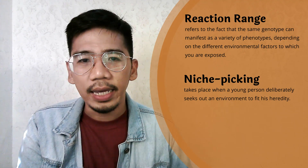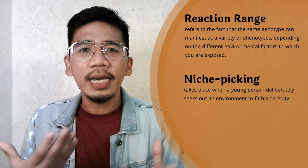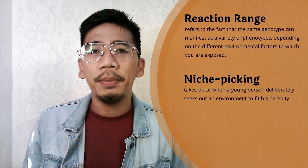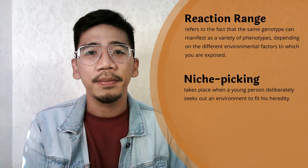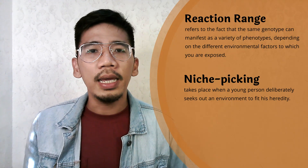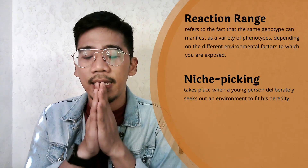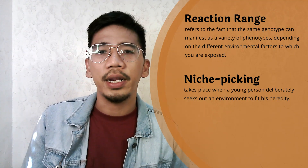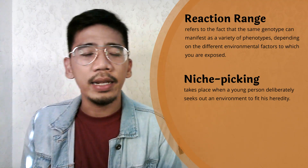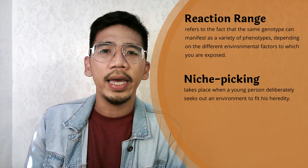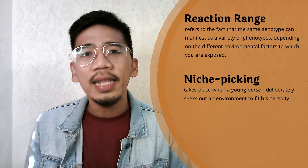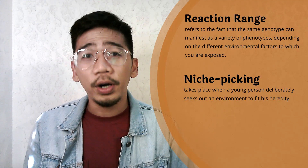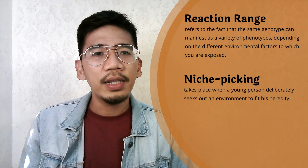Niche picking is a useful concept because it describes what takes place when a young person deliberately seeks out an environment to fit his heredity in an ongoing feedback loop. He receives positive signals when he is in an appropriate environment for his temperament, IQ, or any other inherited trait. Even an extroverted four-year-old can express a preference between a preschool that puts more emphasis on early reading versus one that provides more outside play — he picks the niche that feels right for him.